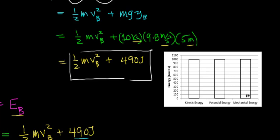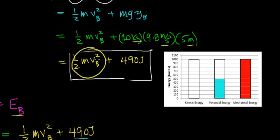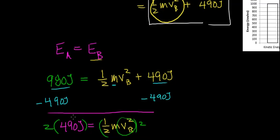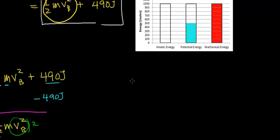Now let's look at the energy diagram when the rock falls half the distance. According to the conservation of mechanical energy, the total mechanical energy at any point along the object's path equals the total energy at the very top — 980 joules. We calculated the total potential energy when the rock had fallen 5 meters to be 490 joules, so we fill in 490 joules on the potential energy graph. We already found that the rock had a total kinetic energy of 490 joules, so filling in the kinetic energy bar shows that kinetic plus potential equals the same total mechanical energy.